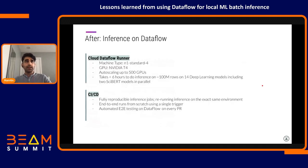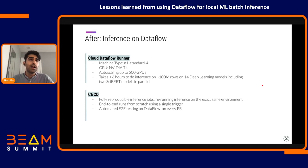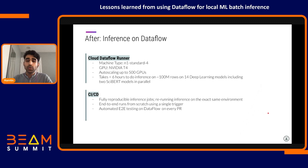We are now fully moved to Dataflow and all our models are in production there. We use a standard configuration with N1 standard machine types on GCP and NVIDIA T4 GPUs. We can easily auto-scale up to 500 GPUs and simply increase the number of nodes and GPUs if needed. Our inference job takes less than six hours, doing inference on 50 million to 500 million rows across 14 deep learning models, including two CYPHER models in parallel. We also run end-to-end tests on every PR directly on Dataflow to catch most Dataflow-related errors before nightly runs.